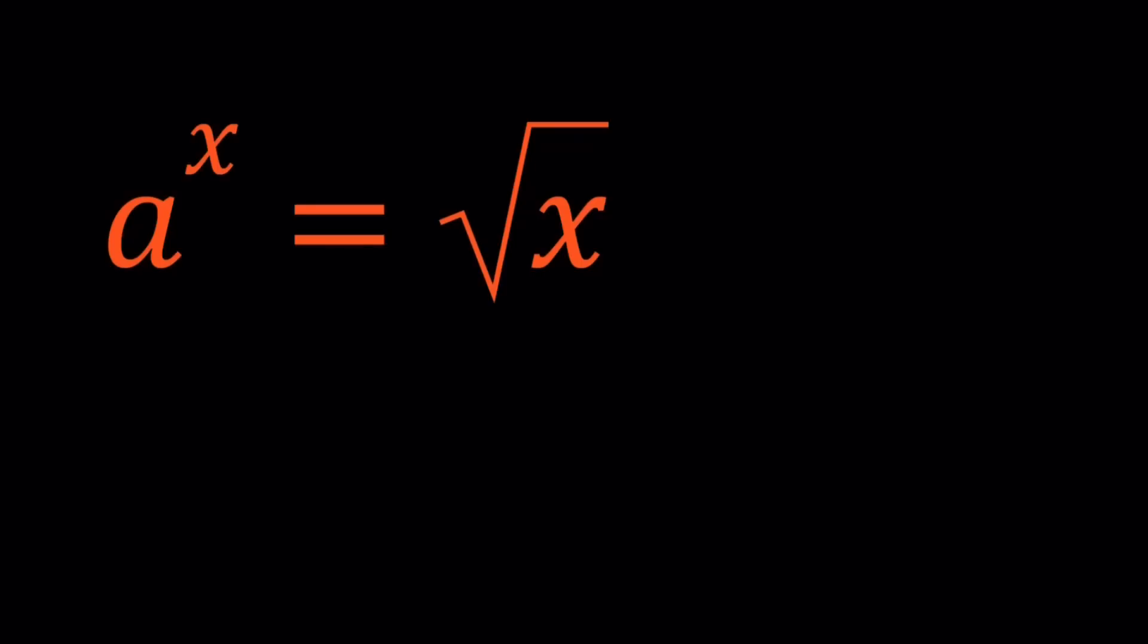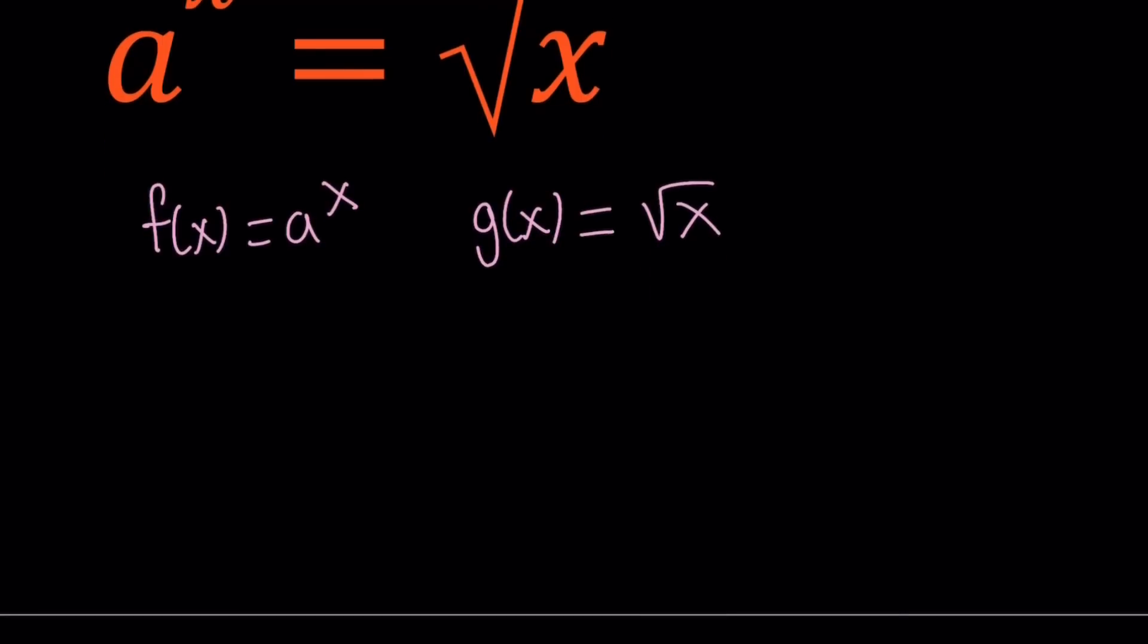So I'm going to show you a couple graphs, but let's go ahead and take a look at the functions first. So we have f of x equals a to the power x, and g of x equals square root of x. So the question is, we want these two functions, the graphs of these two functions, to be tangent to each other.